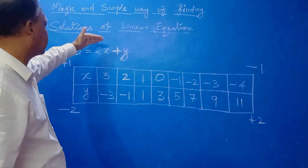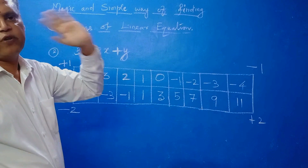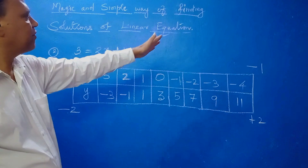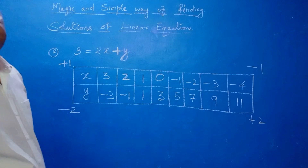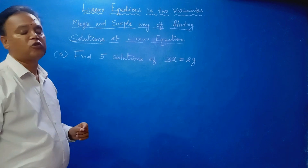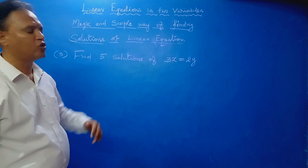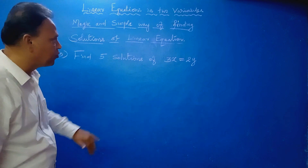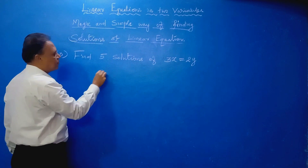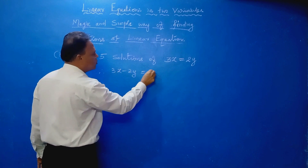Linear equation has infinitely many solutions — from this easy method you can understand that. One more problem: find 5 solutions of 3x equal to 2y. You rewrite this equation by bringing the y-term to this side, therefore you can write 3x minus 2y equal to 0.